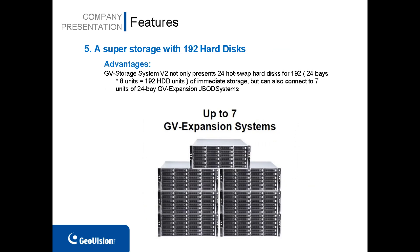Feature number five: a super storage with 192 hard drives. Compared to other PC-based systems and NAS systems which only allow for 4 to 8 hard drives for data storage, GV Storage System v2 is equipped with 24 hard drives, and you can also connect to seven units of 24-bay GV expansion systems, giving you a total of 192 hard drives.